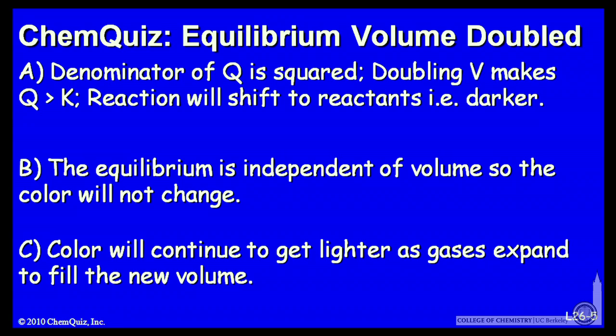Let's look at a possible explanation for each answer. A, the denominator of Q is squared. So doubling the volume makes Q larger than K, and the reaction will shift to reactants, that is, darker. B, the equilibrium is independent of volume, so the color will not change. Or C, the color will continue to get lighter as the gases expand to fill the new volume. Think about that for a minute and make a selection.